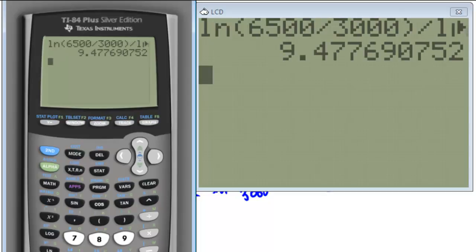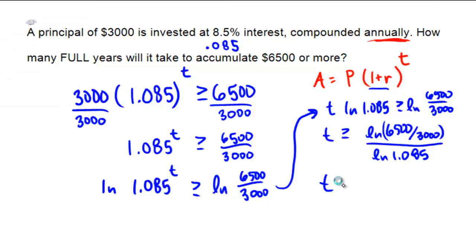So it looks like our calculator is telling us it's 9.477. So we need T to be bigger than 9.477 and we need a number of full years. So my final answer here would be T equals 10. I need to wait at least 10 years.